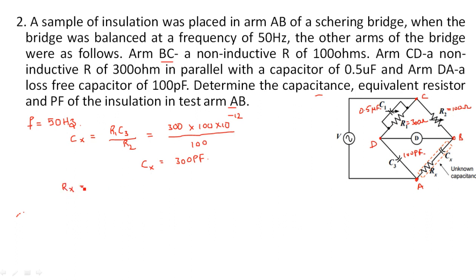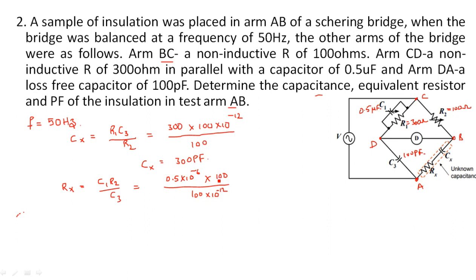For the unknown resistance Rx, using the formula Rx = C1 × R2 / C3: C1 = 0.5 microfarad = 0.5 × 10⁻⁶, R2 = 100 ohms, C3 = 100 picofarad = 100 × 10⁻¹². The 100s cancel and simplifying gives Rx = 0.5 mega ohms, or equivalently 500 kilo ohms.